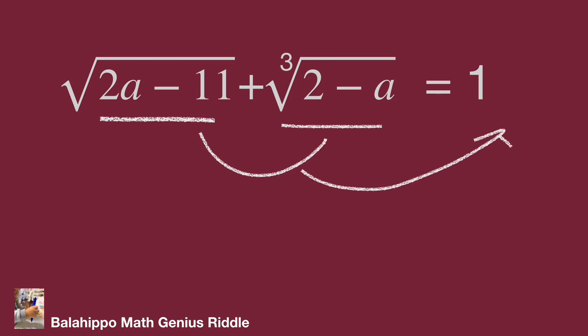If I multiply 2 by 2 minus a, then plus 2a minus 11, it will eliminate a. Let's take note of this finding.